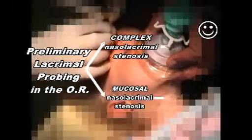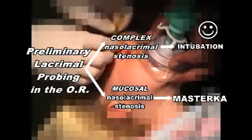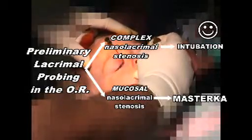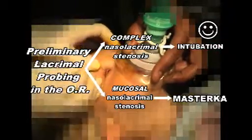In summary, careful preliminary lacrimal probing in the operating room is paramount for proper use of the Master Ka. It distinguishes by tactile sense the more common types of mucosal nasolacrimal stenosis from the less frequently seen cases with complex stenosis. By requiring metal-to-metal contact in the nasal fossa, it avoids false passages which always result in failure. It facilitates the correct choice of stent length, which should extend five millimeters beyond the site of nasolacrimal obstruction without exceeding the distance between the punctum and the nasal fossa floor. When the Master Ka is appropriately selected and inserted properly, the complications are minimal and the success rate very high.